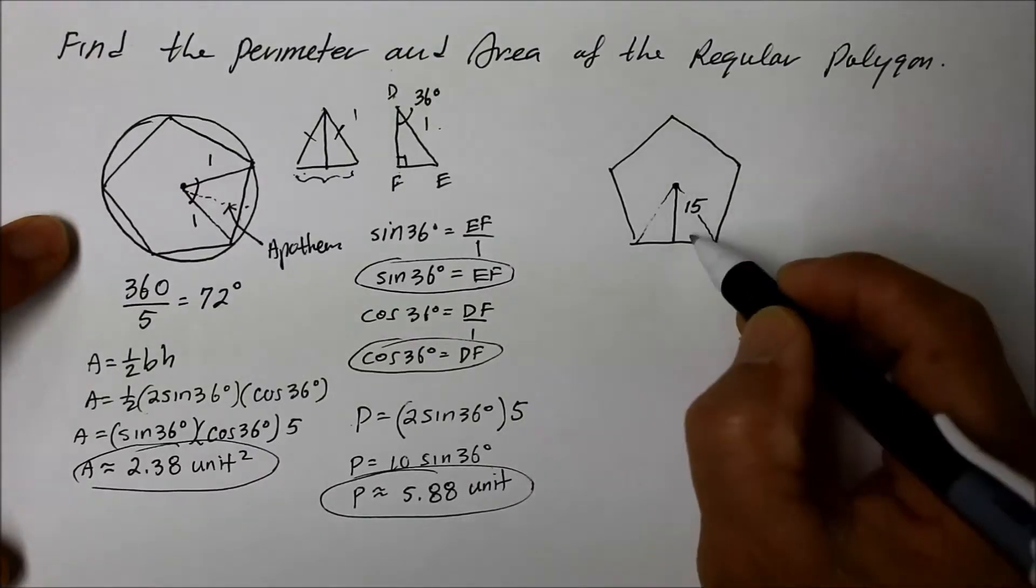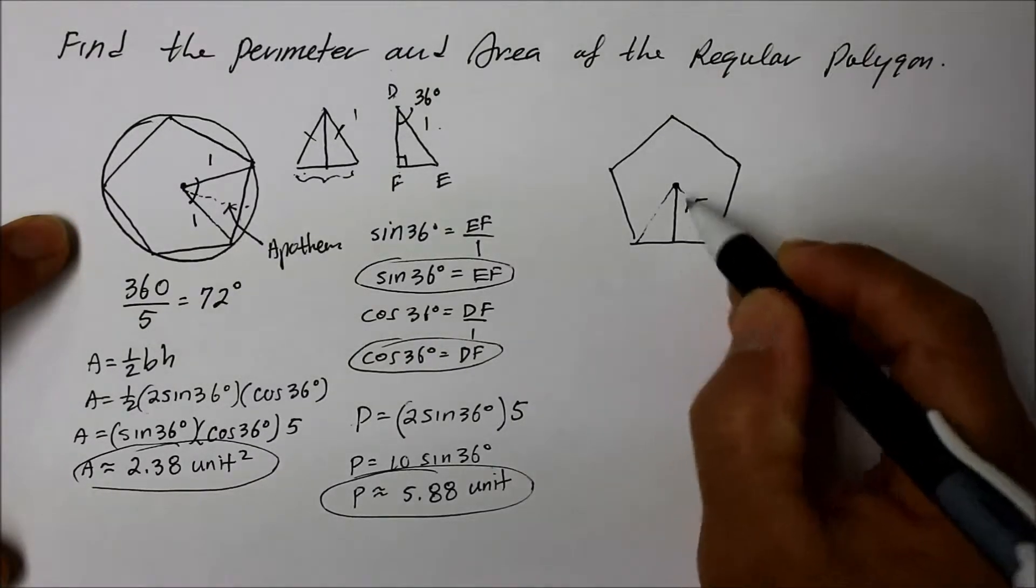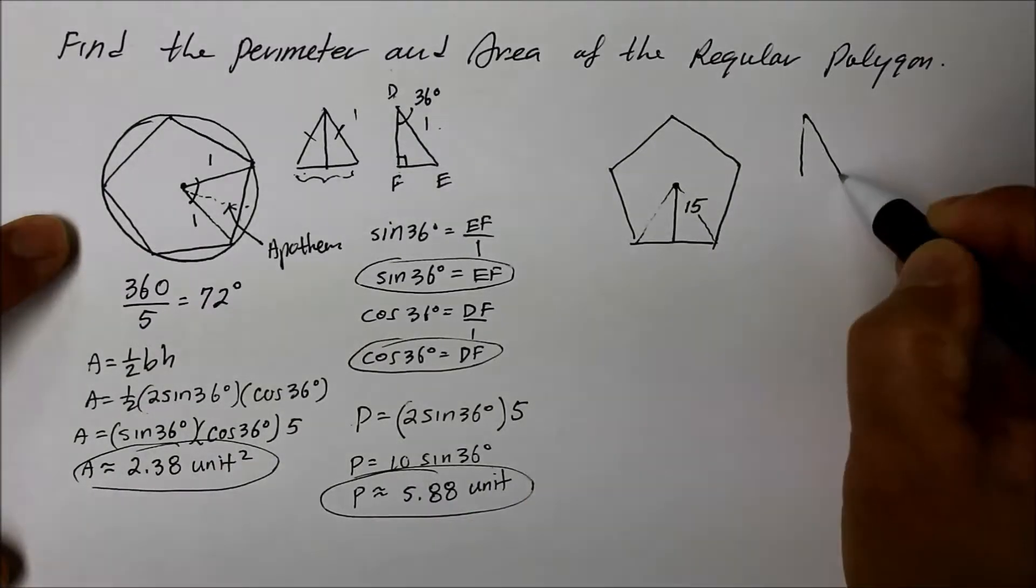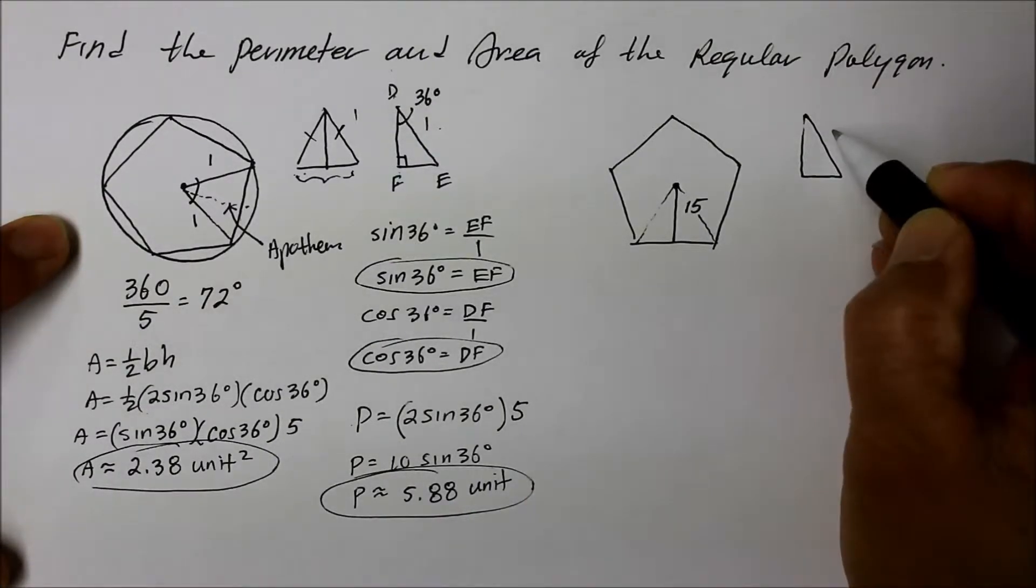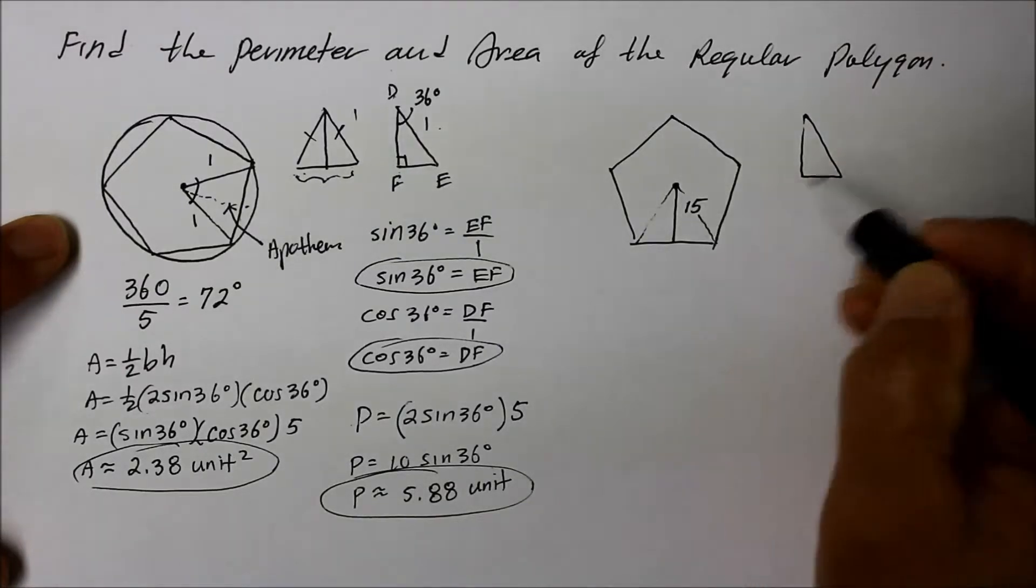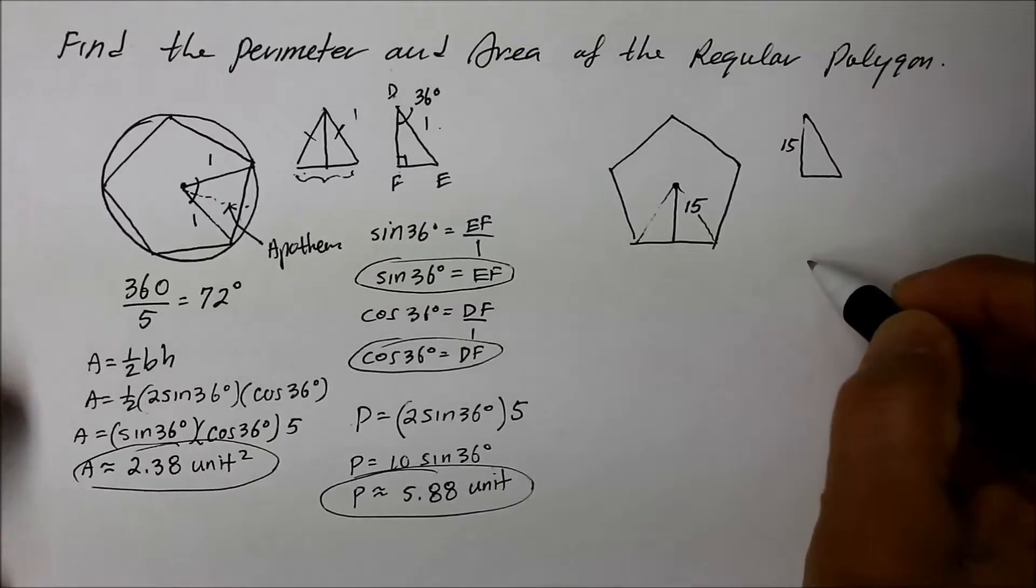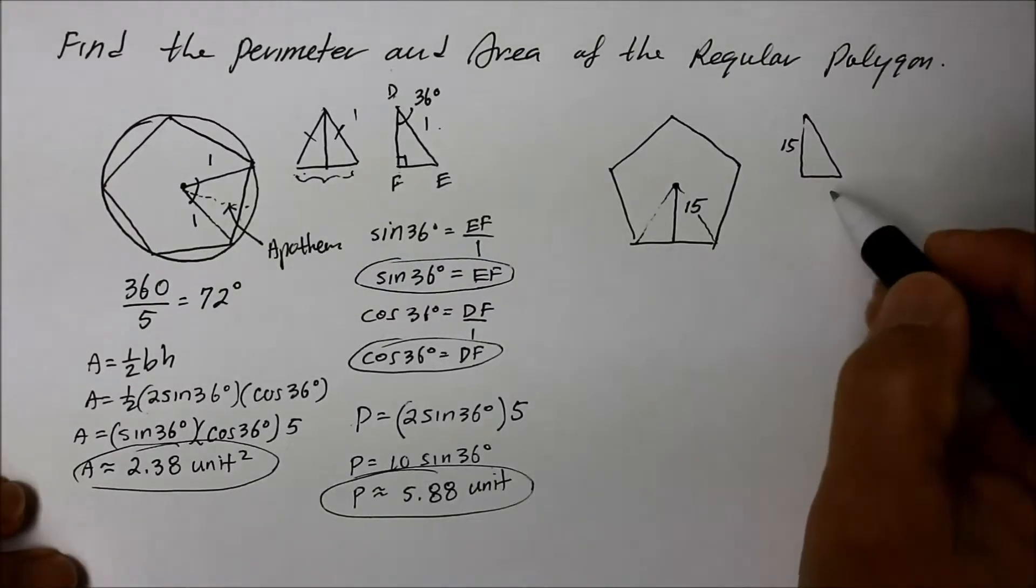And in fact, let's break that isosceles triangle into half, right there, so that the hypotenuse—I'm sorry, that's not the hypotenuse, that's the apothem. The height is 15. So what we don't know this time.